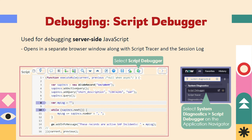For debugging server side JavaScript, we can select the script debugger under the business rule scripting section. Clicking it opens another browser window with the script tracer, and we can also view the session log. Additionally, we can click on System Diagnostics and navigate to script debugger via the navigator or filter navigator. Both methods allow us to perform script debugging.